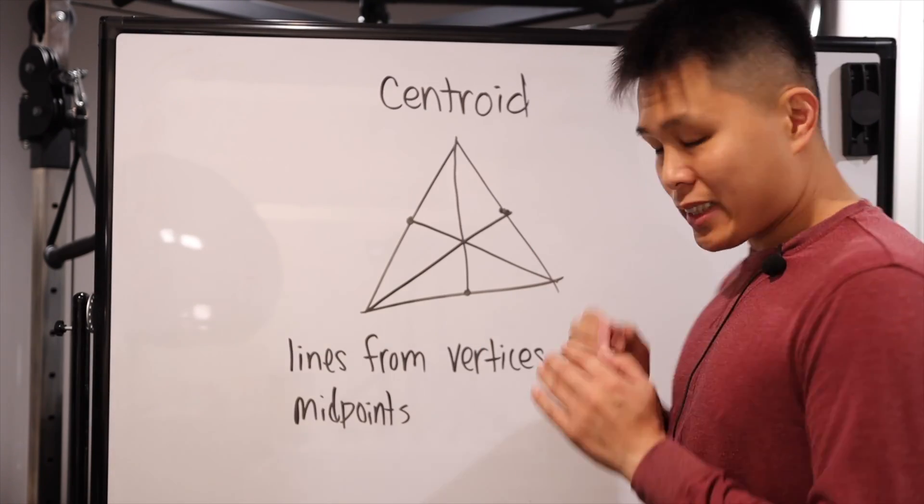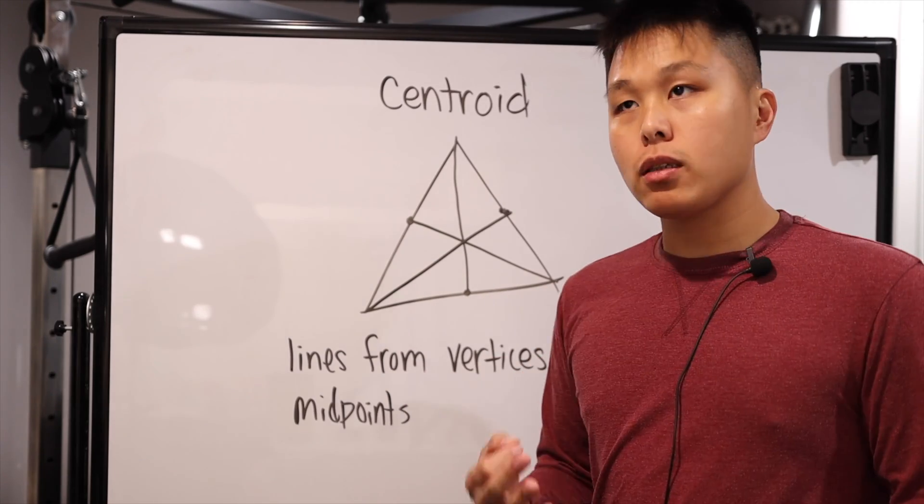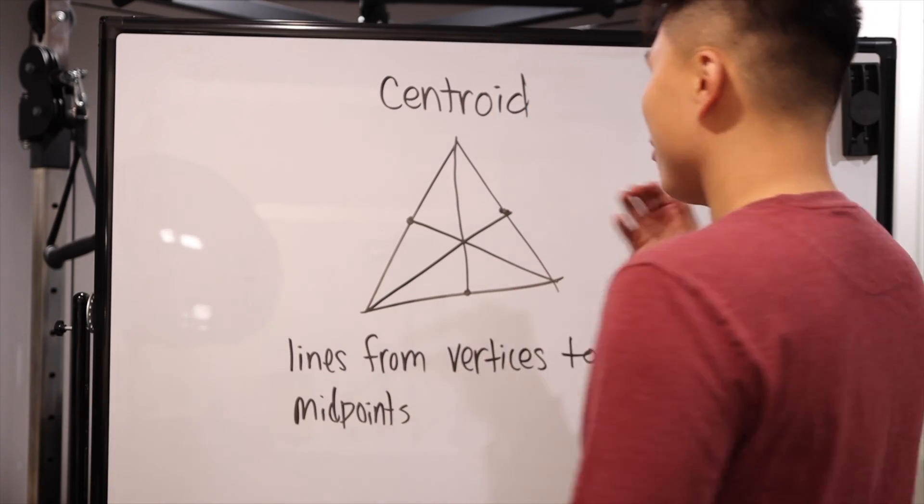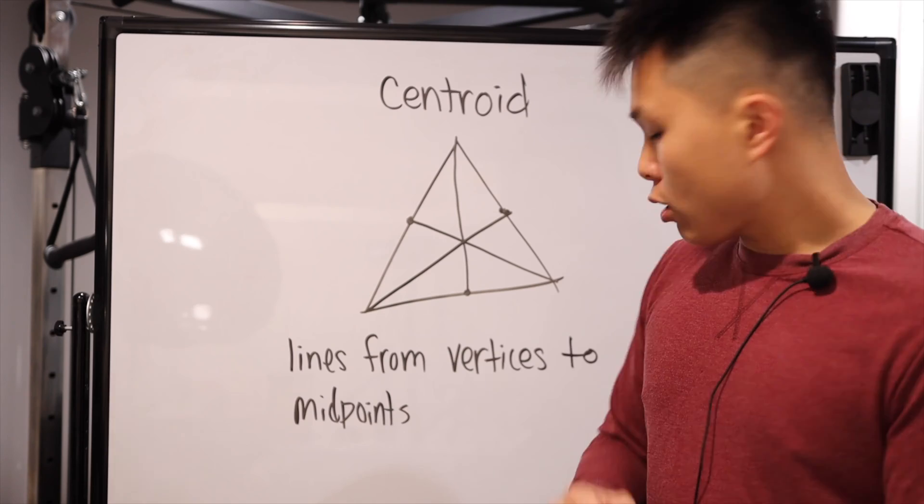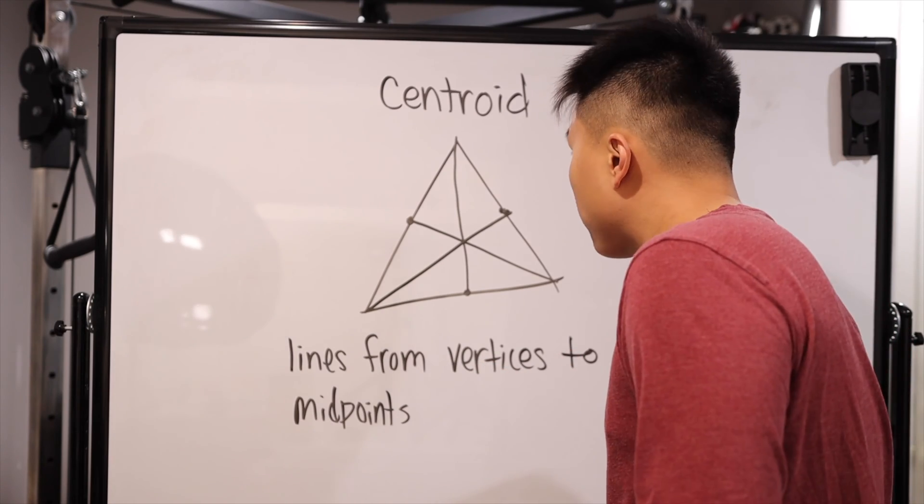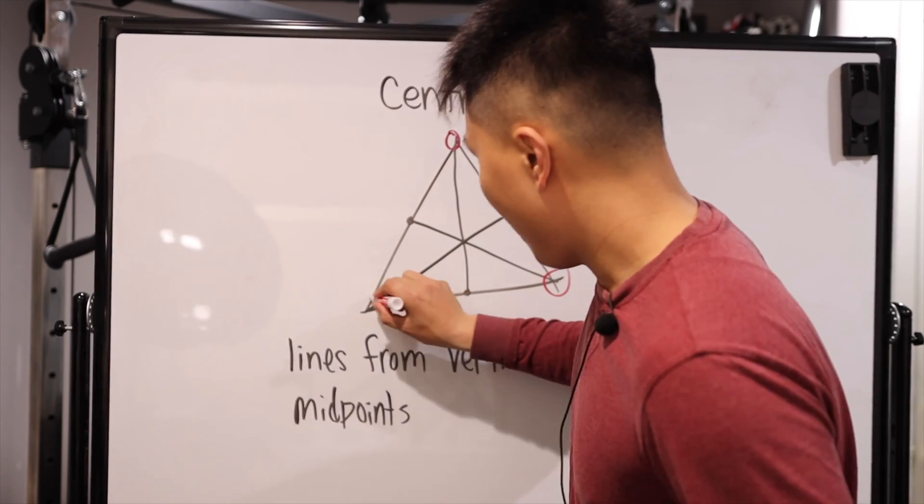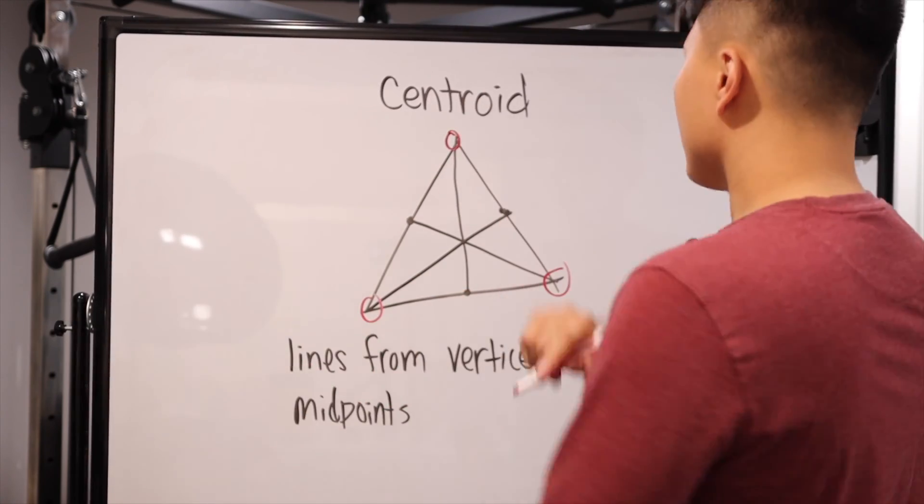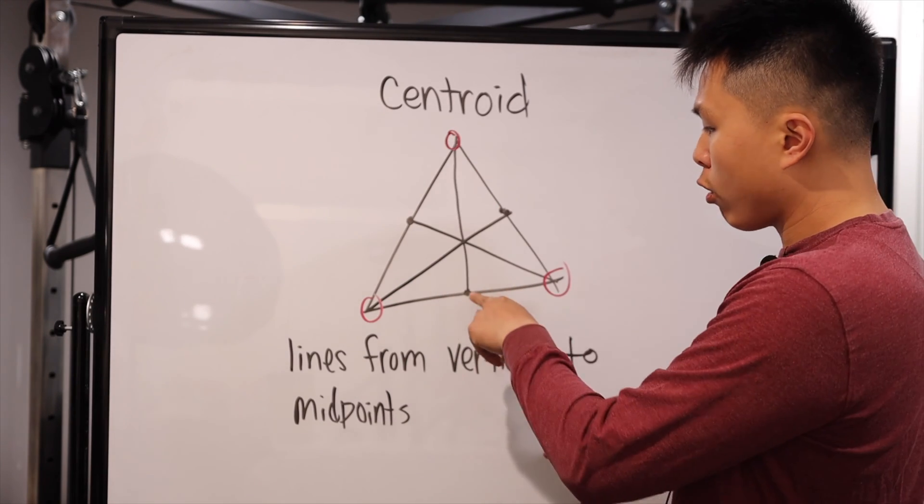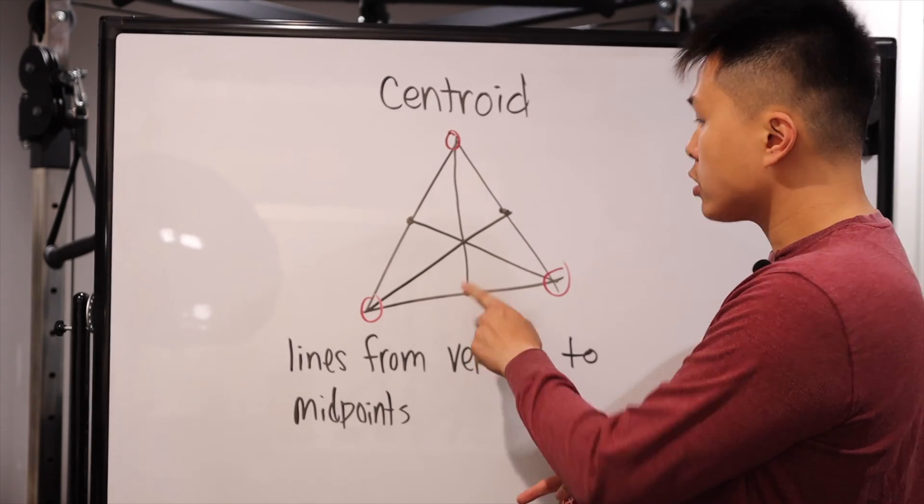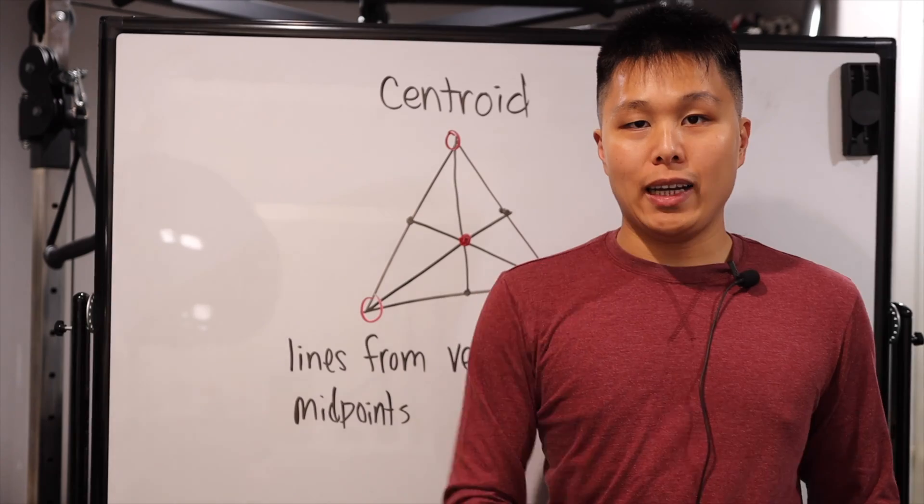All right, so the third one is a centroid. Now, this has nothing to do with the perpendicularity of any of the line segments. This one only focuses on the vertices and the midpoint. So the vertices, once again, are these basically these tips of triangles. And then the midpoint is the midpoint of each segment. So when you get the vertices and you draw to the midpoint across, they all intersect, and this point right here is known as the centroid.